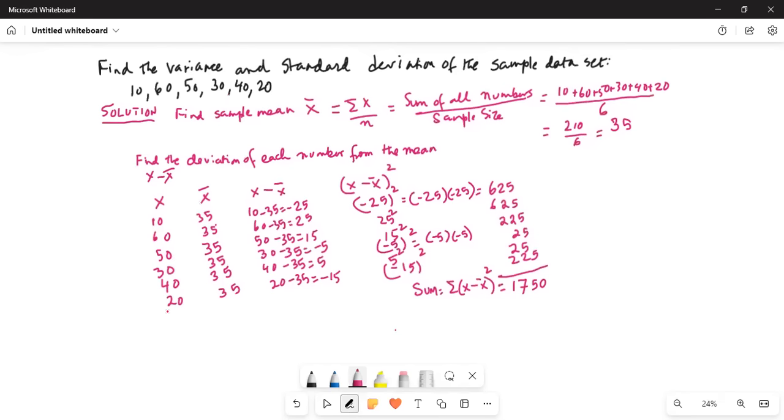Sample variance is given by s² equals sum of x minus x̄ squared divided by n minus 1. This is a point to note. It is n minus 1. So it is 1750 divided by our sample size 6, so 6 minus 1. So 1750 divided by 5, which is equal to 350. So variance is 350.